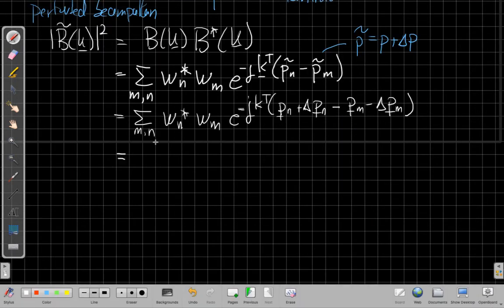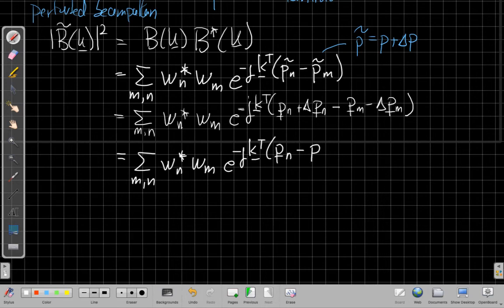All right, so when I do that, I'll get the sum over M and N, W_n conjugate W_m, e to the minus j K wave number transpose. And then I'll have the nominal vector locations P_n minus P_m and then another e to the minus j K transpose times, again, the perturbation vector. So this is a three-dimensional vector that is the random part for the nth sensor and the mth sensor, the difference of those. And so what's nice about this is I've got all the nominal stuff here,